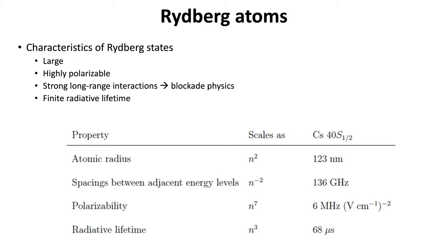Here's a list of how a couple of these different properties scale with the principal quantum number. The radius gets very large as n increases, and formally n can go to infinity — in practice n can get up towards 100, so the radius can be very large. The right-hand column shows particular values for an excited state of cesium. Of course the levels get closer and closer together, the polarizability gets extremely high, and the lifetime also depends on the principal quantum number — one of the ingredients that goes into choosing which Rydberg state to work with.